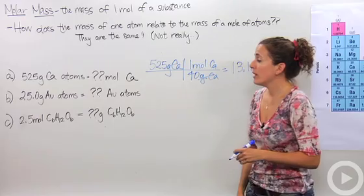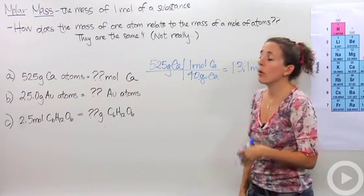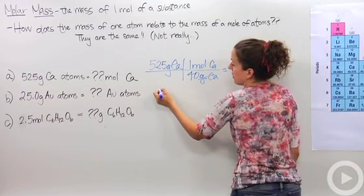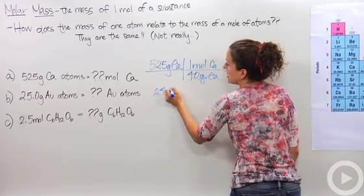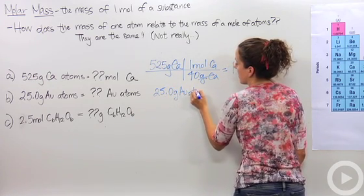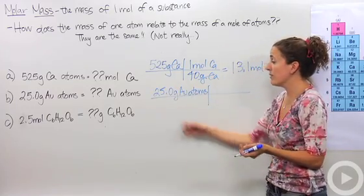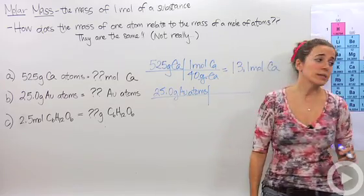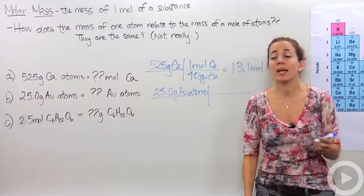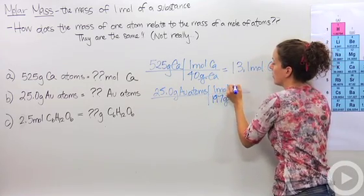Let's do another problem. We have 25.0 grams of gold atoms. How many gold atoms is that? We start with our given: 25.0 grams of gold atoms. First we have to figure out the molar mass of gold. Looking at the periodic table, gold is 196.9 — approximately 197 grams for every one mole of gold.